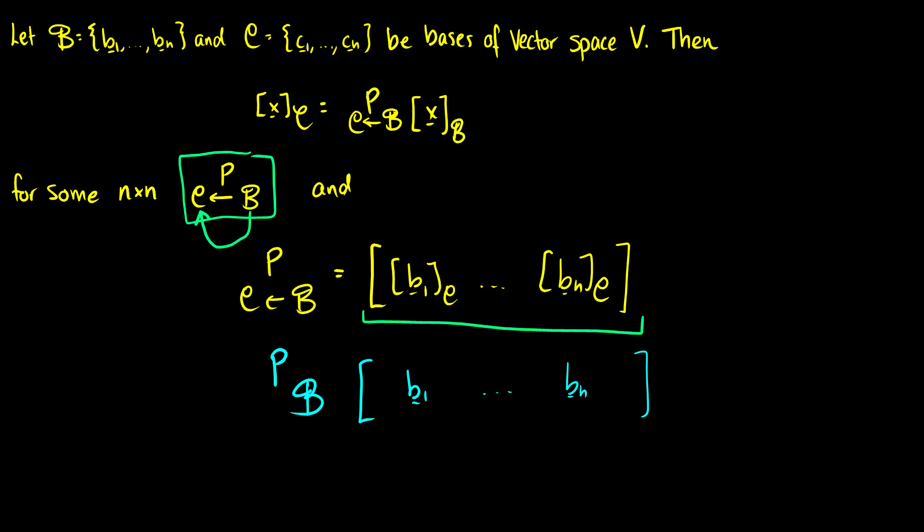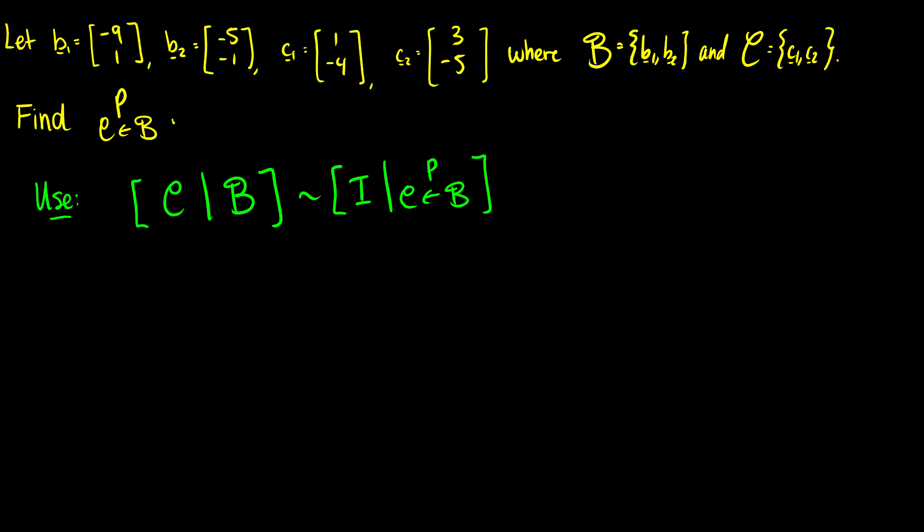So you've really already seen this before. So with that being said, let's jump right into it. We're going to let b1, b2, c1, and c2 be vectors where the b's form a basis and the c's form a basis, and we want to find the change of basis matrix.